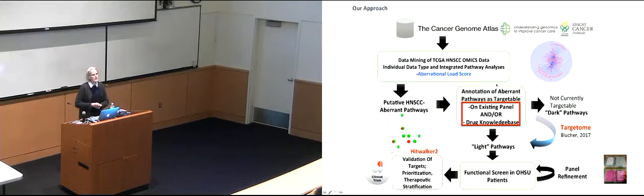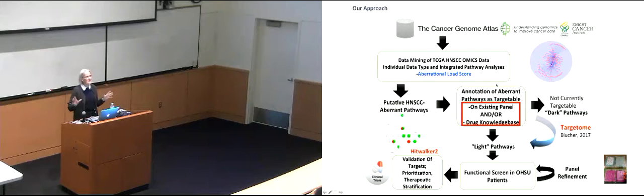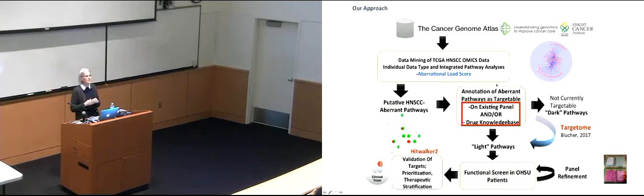We started by looking at the large Cancer Genome Atlas database with 528 head and neck cancer cases. We mined those for targetable pathways and classified them: pathways targetable now with drugs on a panel are called 'light pathways,' and pathways with no drug targeting any protein in them are called 'dark pathways.' Hence my title. We're trying to illuminate targetable pathways by repurposing known drugs, bringing in drugs from other fields, or developing drugs de novo to target some of these pathways.